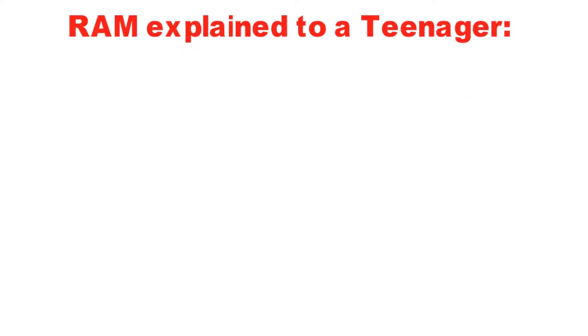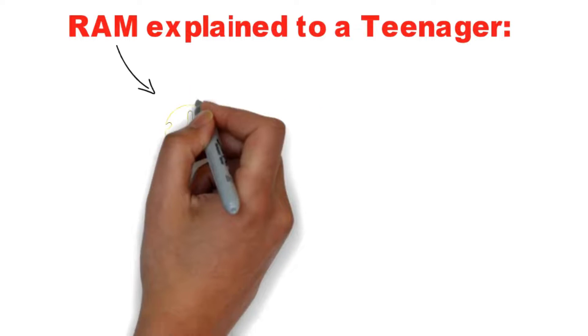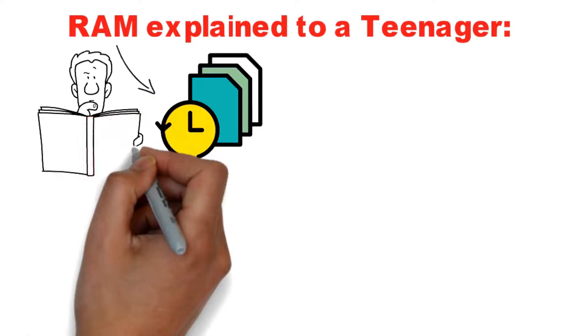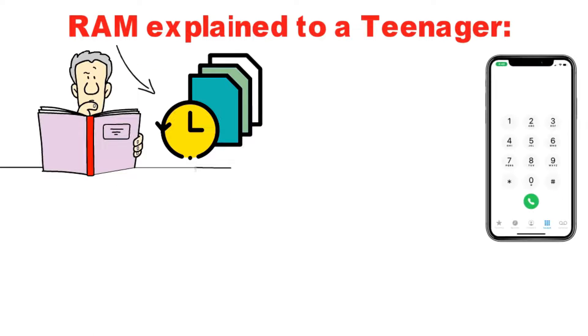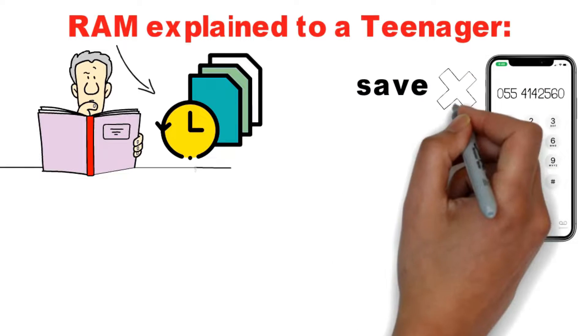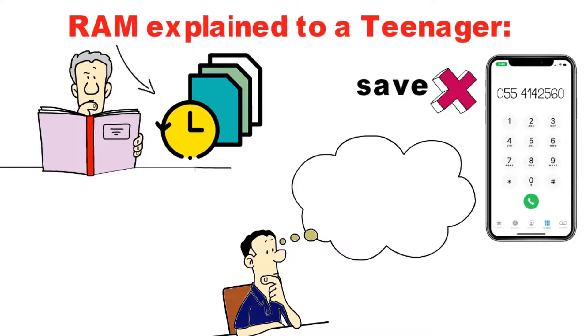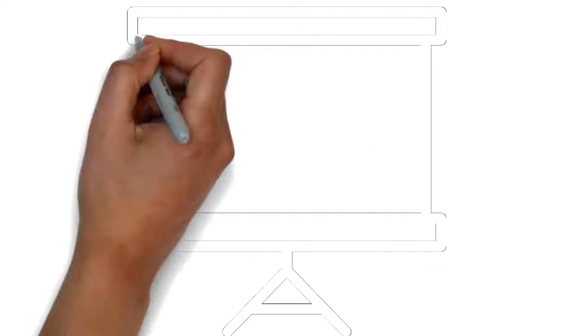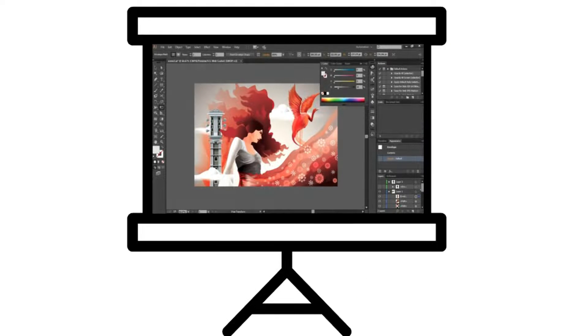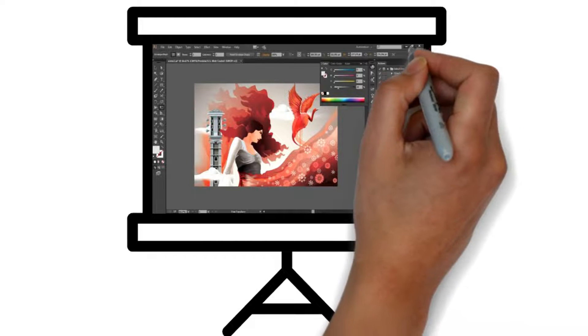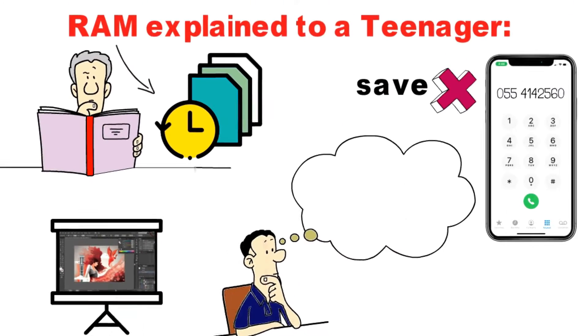RAM explained to a teenager. RAM is actually a temporary memory. Consider you read a quote somewhere or overheard a phone number. If you didn't save that phone number or quote at that time, it will then be deleted from your memory, as it was temporarily going on your mind, and as soon as you thought about something else, it's gone. Same as RAM. Consider you made some changes in your art piece on paint your computer has in its temporary memory. As soon as you open something else by closing without saving, it's deleted.